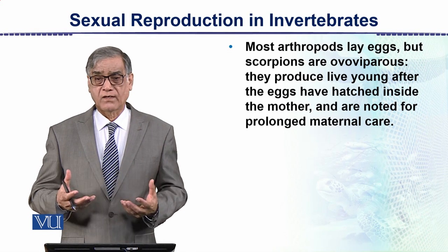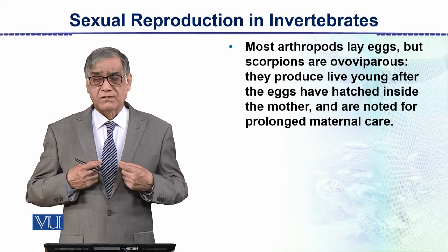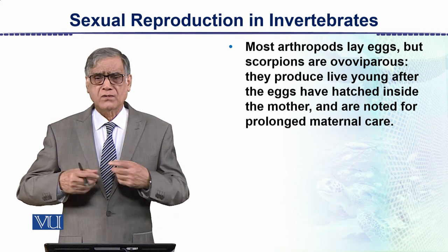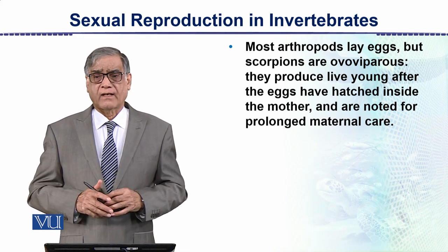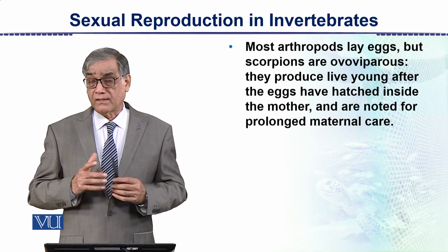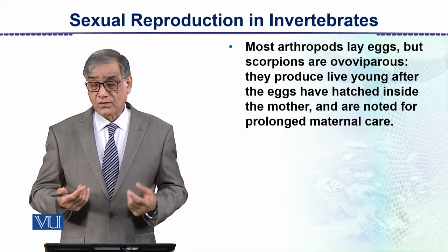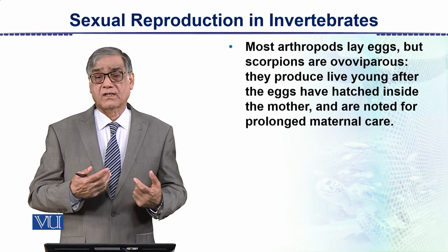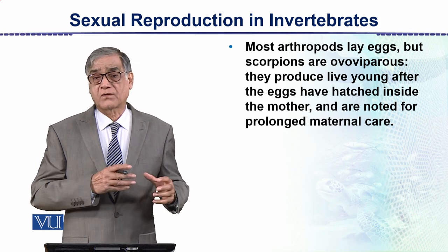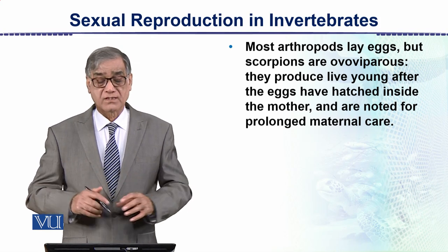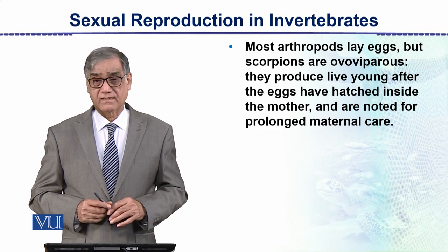Basically, sperms and eggs come together, the zygote develops and undergoes a long series of processes until a complete individual is formed. It then hatches out of the egg, grows by feeding, and becomes an adult. This concludes the topic of sexual reproduction in invertebrates.